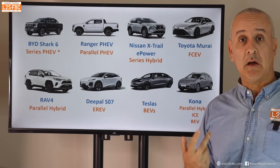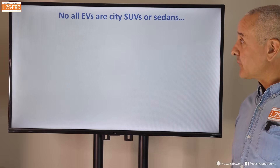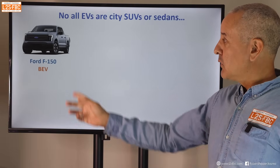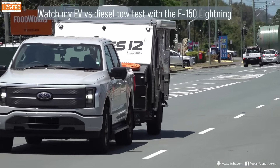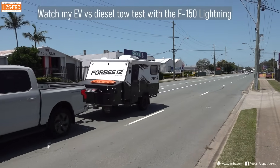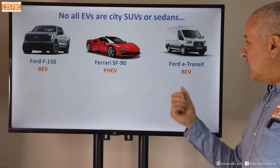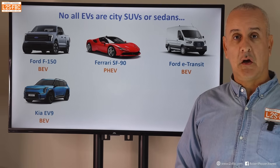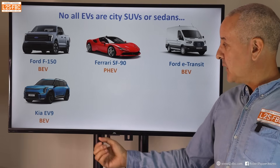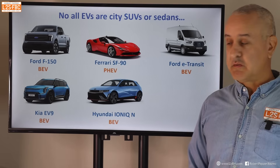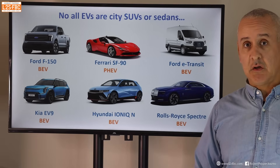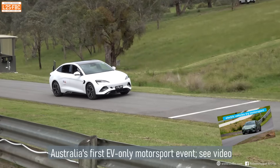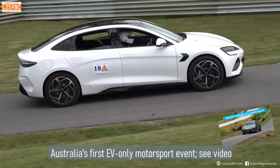The Hyundai Kona is available as an electric vehicle, an ICE vehicle, or a hybrid — giving buyers a full choice. And EVs aren't just city SUVs: the Ford F-150 Lightning is a pure BEV, the Ferrari SF90 is a plug-in hybrid, the Ford Transit comes as an EV, the Kia EV9 tows two and a half tonnes and seats seven, the Hyundai Ioniq N is a sports car BEV, and the Rolls-Royce Spectra is a high-end BEV — though most EVs on the market are still road cars.